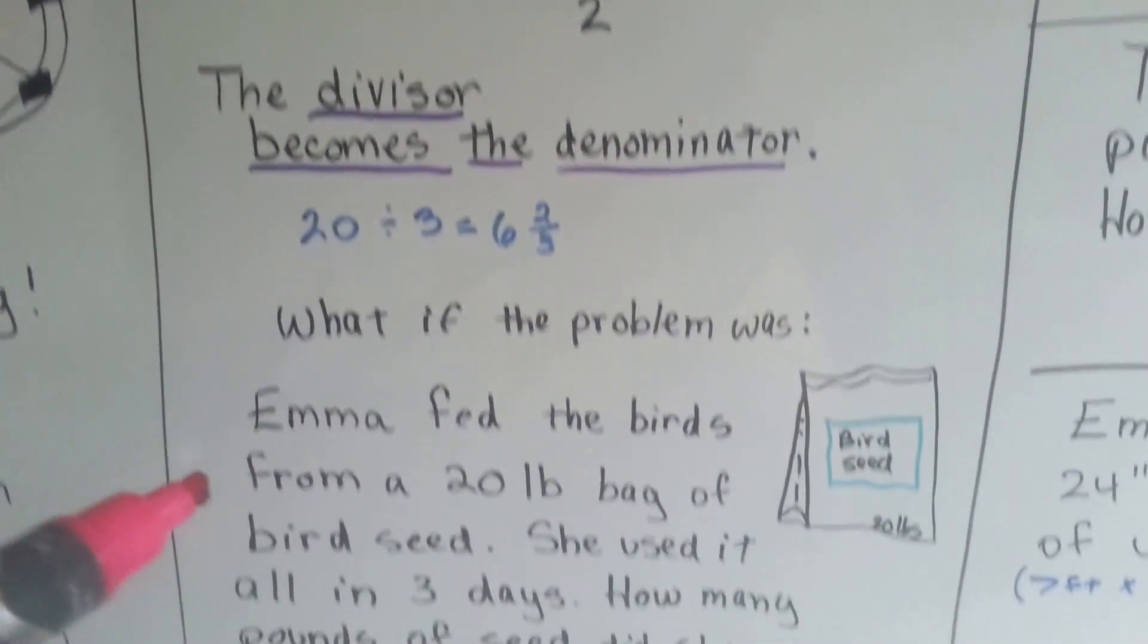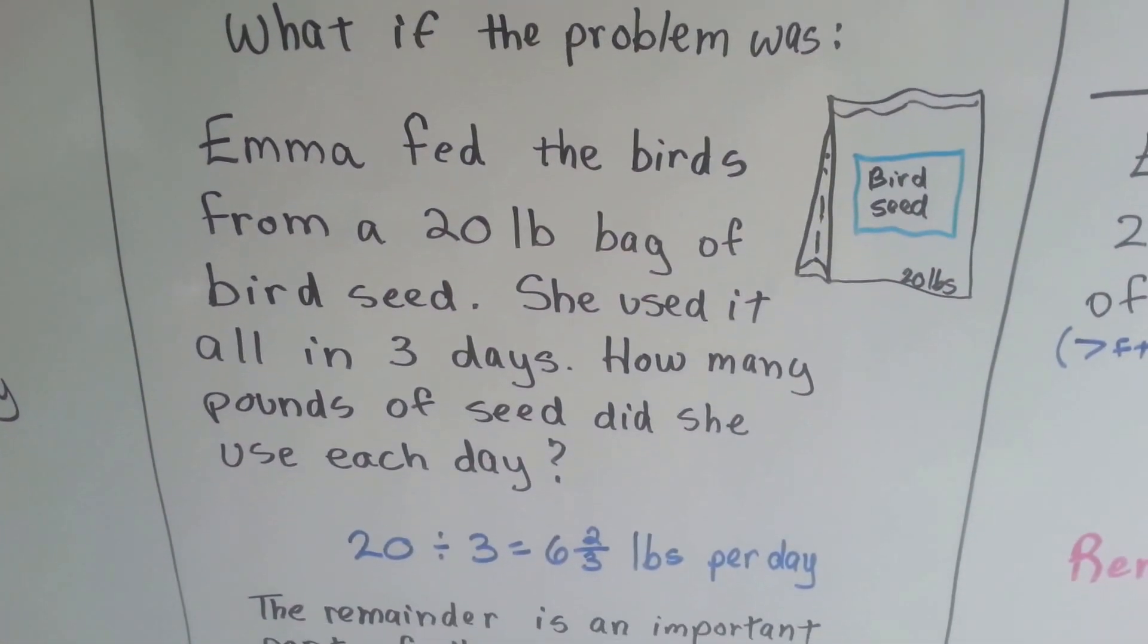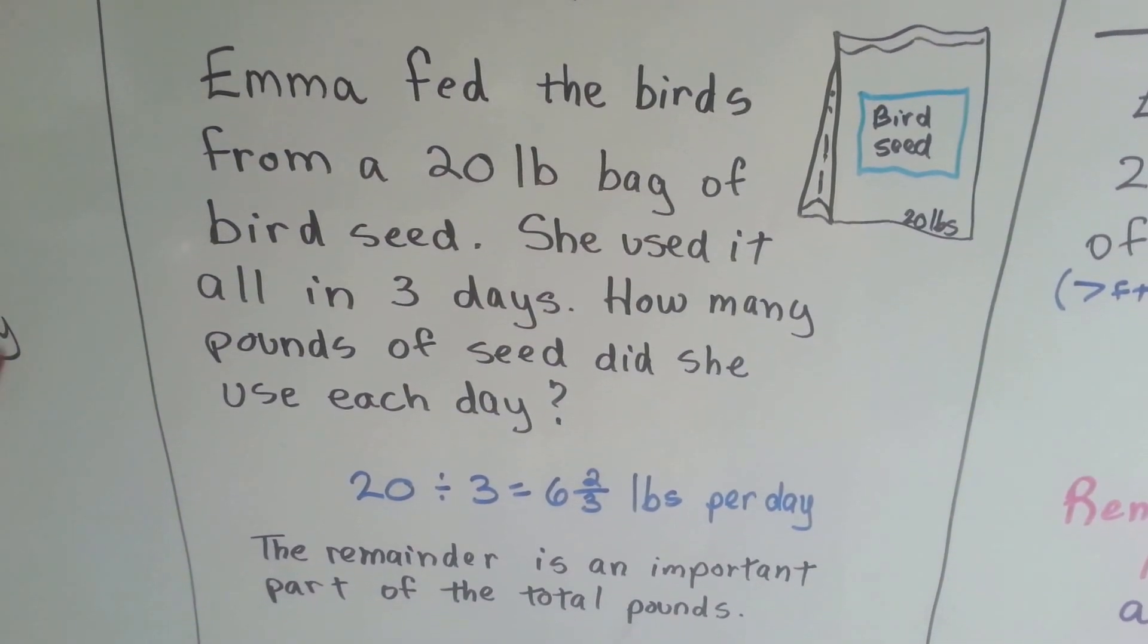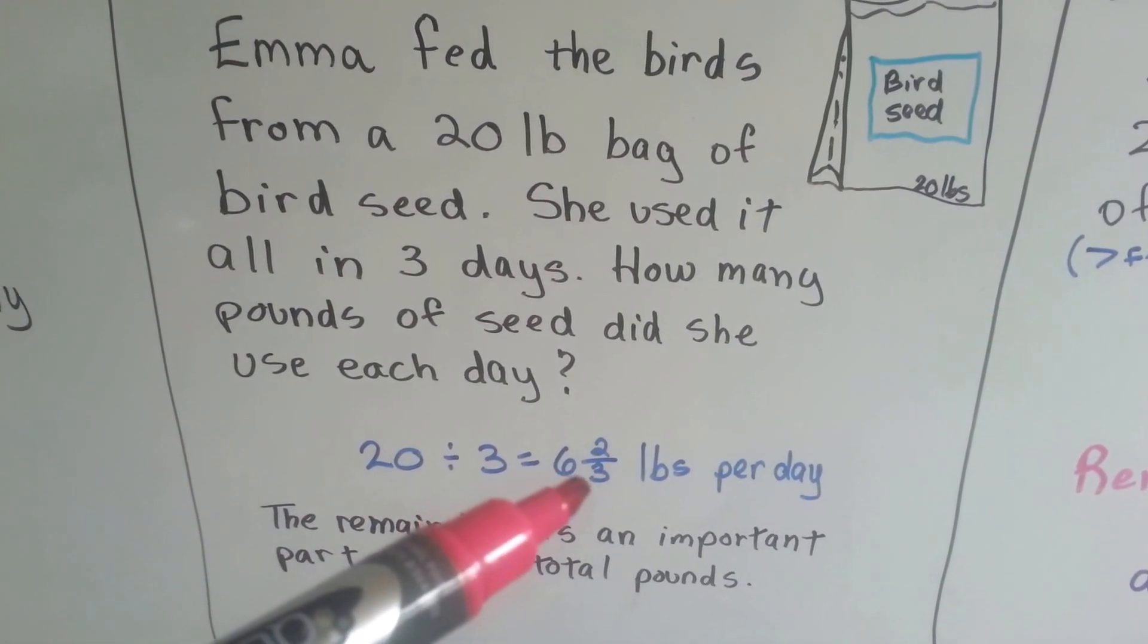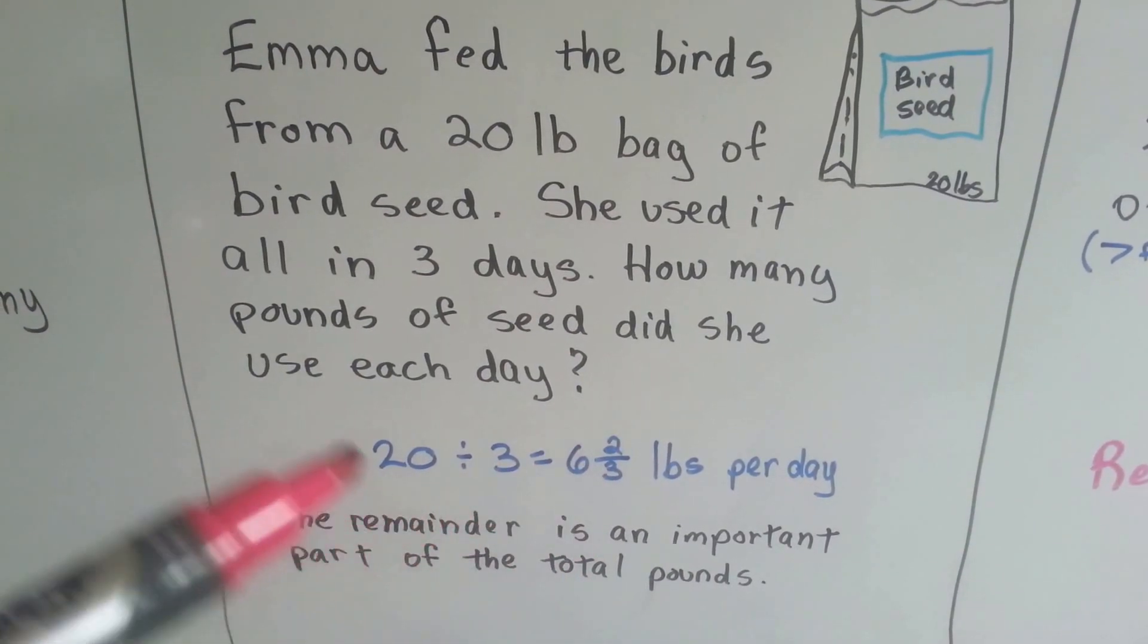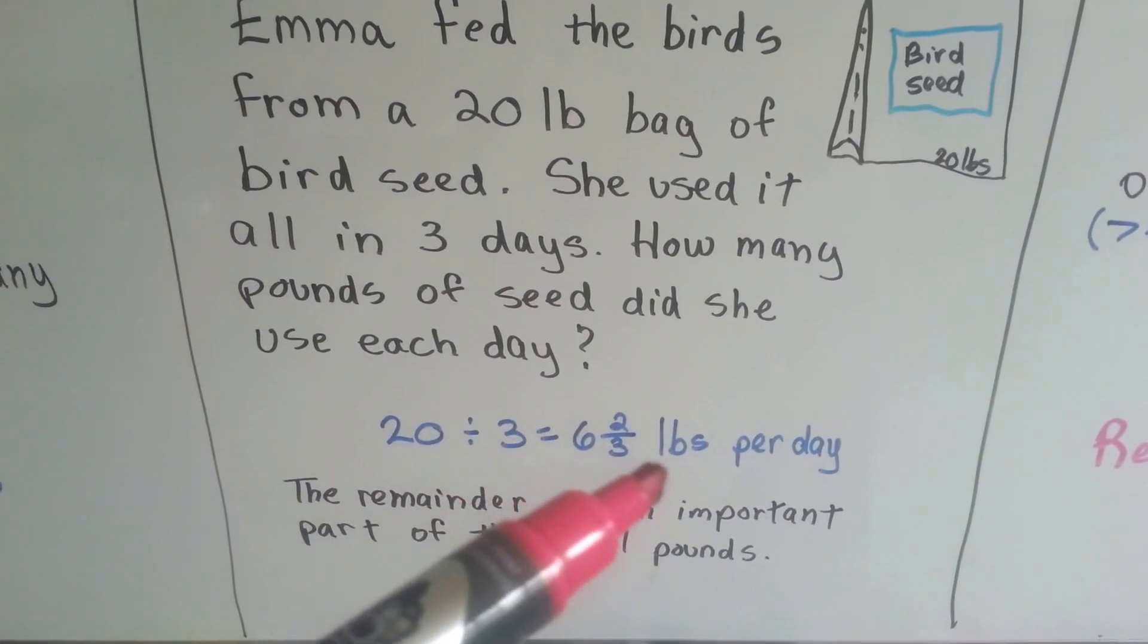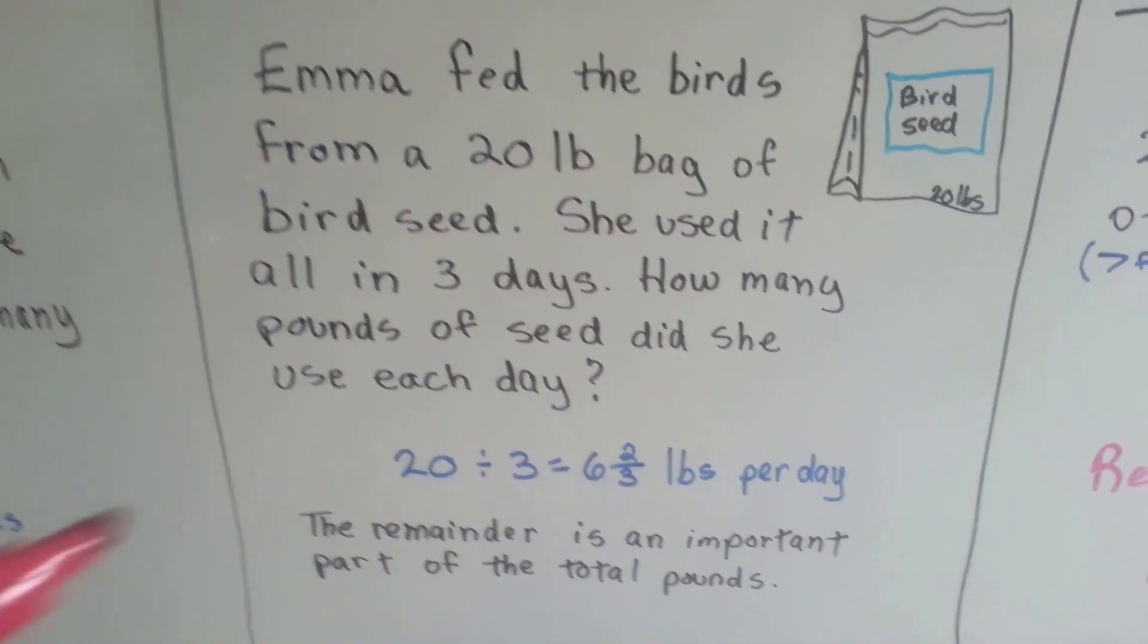What if the problem was, Emma fed the birds from a 20 pound bag of bird seed? She used it all in 3 days. How many pounds of seed did she use each day? Well, see, now we do need that denominator and numerator. We do need that fraction. Because this 2 thirds of a pound is a very important part of how much she fed the birds. She fed them 6 and 2 thirds pounds per day. This time it is important.